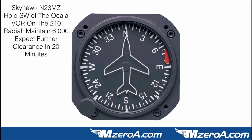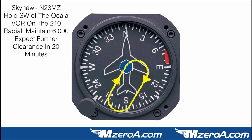Skyhawk November 23 Mike Zulu, hold southwest of the Ocala VOR on the 210 radial. Maintain 6,000. Expect further clearance in two zero minutes. Here's how I start: always put your fix in the middle of your heading indicator. Then draw your inbound course from 210 up to that VOR. We've just drawn our inbound course. From there, overlay the right racetrack pattern — it's standard, since they didn't say non-standard. Put the arrows in to visualize those right-hand turns. If I was really on a north heading approaching that, I could make a very easy direct entry. I'd hit my fix, make a right turn, and be locked into my hold. A direct entry is the type of entry I'd make given this radio call.